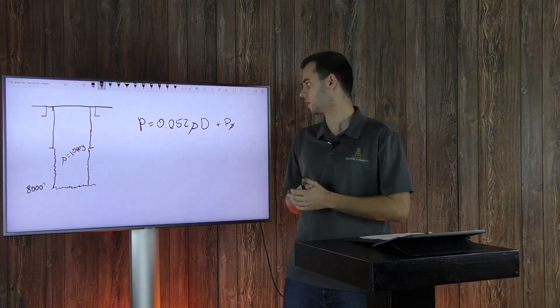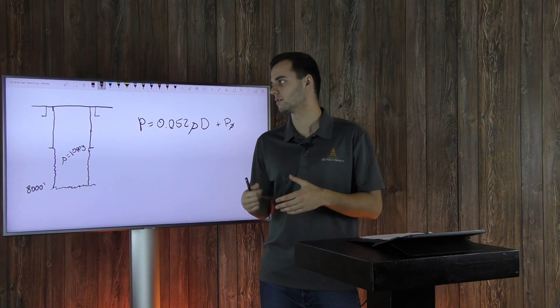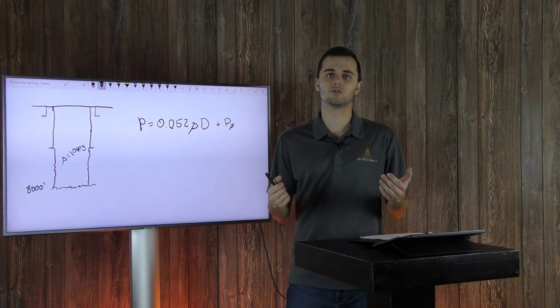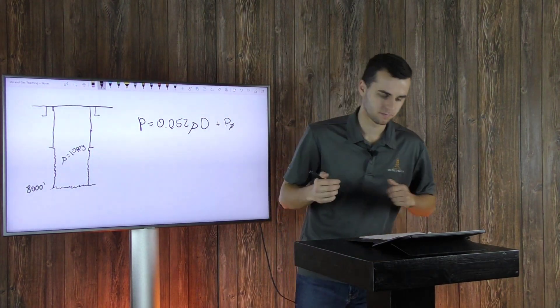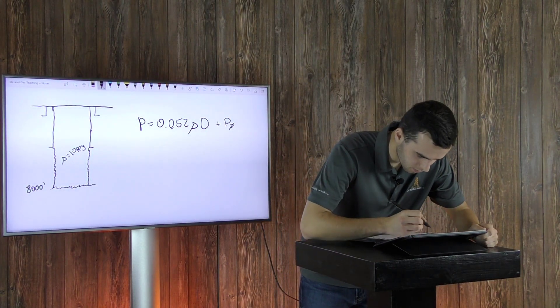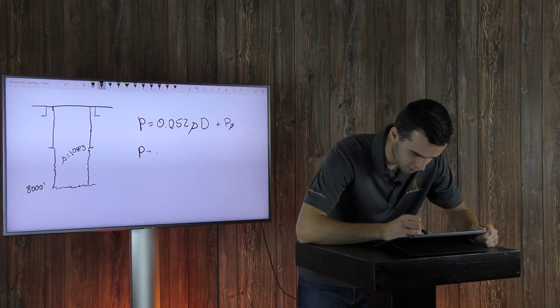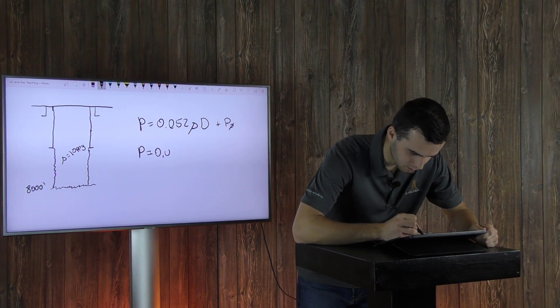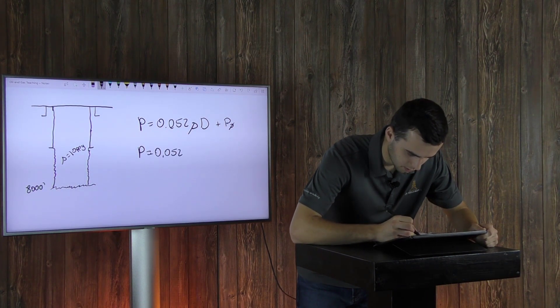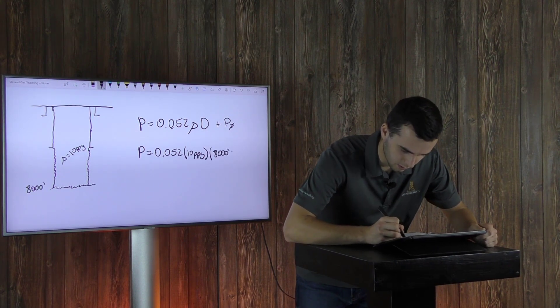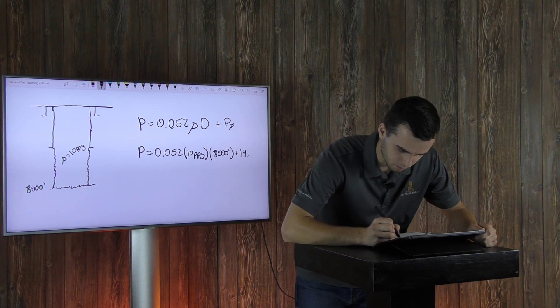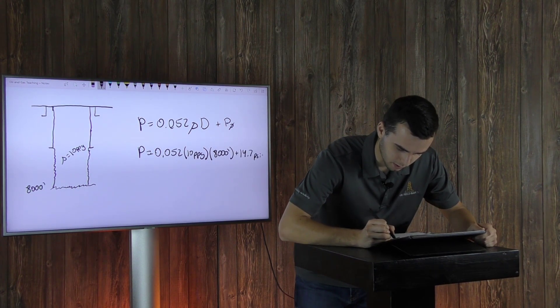And your pressure, p-naught, that would be your pressure at surface, so atmospheric pressure is 14.7 psia. So now let's go through this equation. Your pressure equals 0.052 times your 10 pounds per gallon times your 8,000 feet plus 14.7 psia.